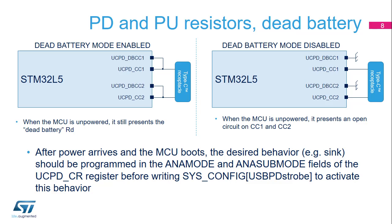When the UCPD is used as an upstream facing port, the dead battery feature enables the UCPD to indicate to the peer node that it needs to be powered. This analog setting is functional even when the MCU power supply is switched off. This default behavior is configured by connecting the DBCC pins to the respective CC pins. After power arrives and the STM32L5 boots, the desired behavior — source or sink — should be programmed in the ANA mode and ANA sub-mode fields of the UCPD CR register, and then the USB PD strobe bit must be set to 1 in the SYSCFG register. Connecting DBCC pins to ground disables dead battery mode; in this case, the peer DFP is unable to distinguish a dead battery state from an unattached state.